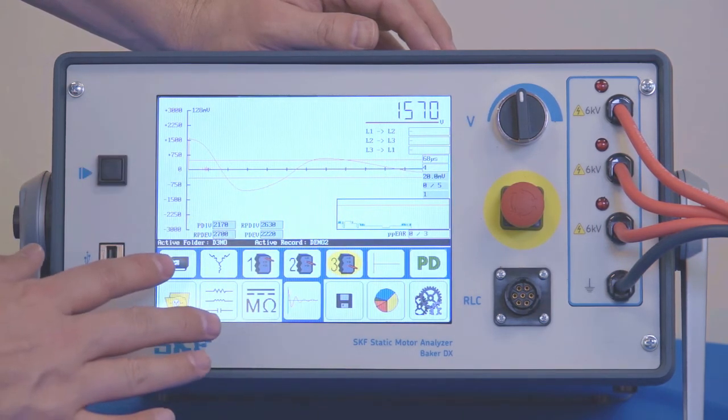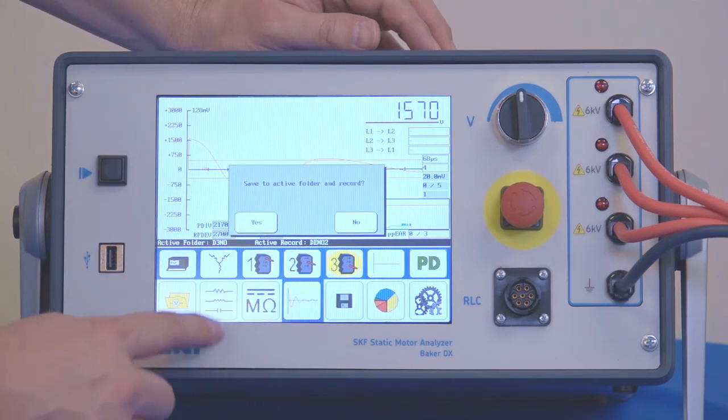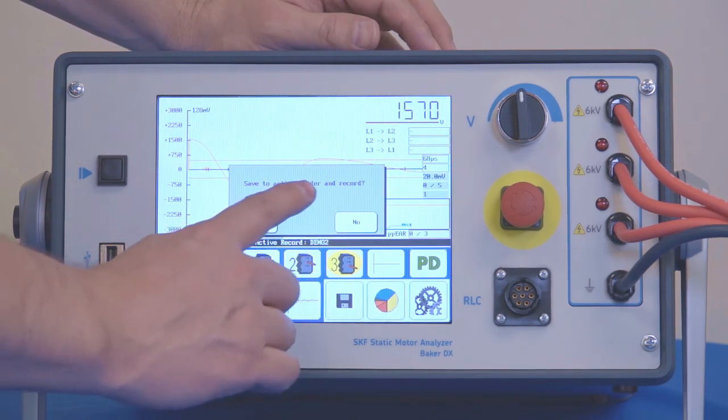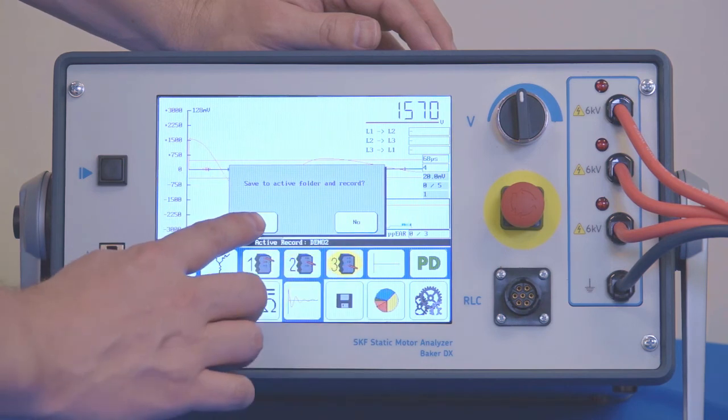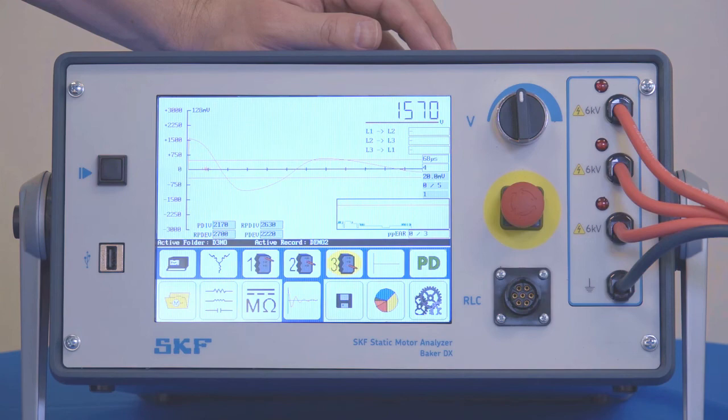Upon completion of all three phases, I want to make sure I click the save button. I'll save the data to either the active folder and record or I could create a new folder and record. I'm just going to select the active and we're done.